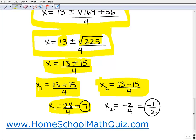When we work out that math, you can see we come up with two answers: x equals 7 and x equals negative 1 half. These are our two solutions.